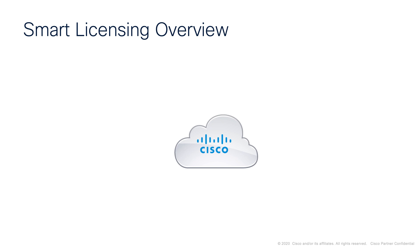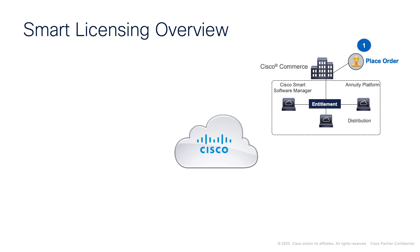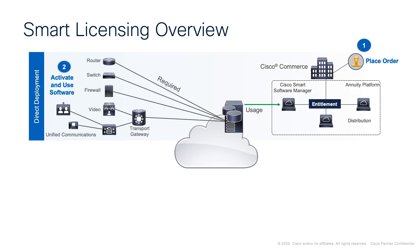Here we're showing the options available to communicate with the Cisco Smart Software Manager, or CSSM. We fully understand that security is a concern for our customers, and with that in mind, I'm going to take you through the options starting with the most simple through to the most secure. The first option: once you have placed your order via Cisco Commerce and have the entitlements ready to go, the first option is to transfer usage information directly over the internet to the Cisco Cloud from the devices that you have, and this is done via HTTPS.